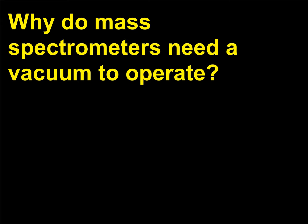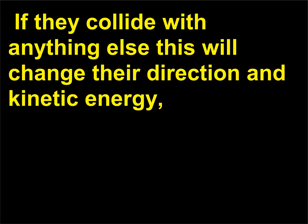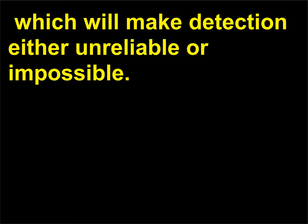Why do mass spectrometers need a vacuum to operate? As the ions travel, they must not collide with any other atoms or molecules before they reach the detector. If they collide with anything else, this will change their direction and kinetic energy, which will make detection either unreliable or impossible.